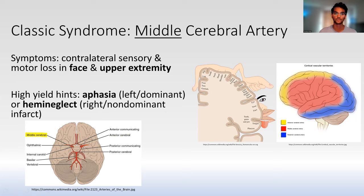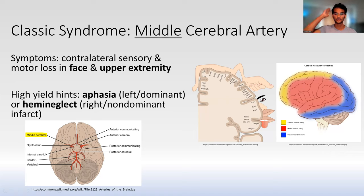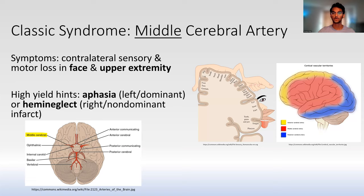Next, the middle cerebral artery. The symptoms are similar, except instead of the leg it's the contralateral face and upper extremity. Looking at the homunculus: the ACA supplies a small triangle of the brain, the MCA supplies a bigger wider triangle that includes the face, hands, and upper limbs. So if I have a right MCA stroke, my fibers cross over and my left side of my face will droop and my left limbs will be weak. Face and upper extremity means MCA; lower extremity means ACA.